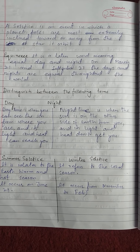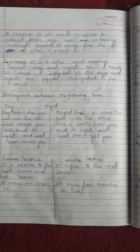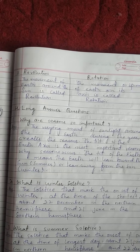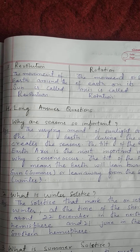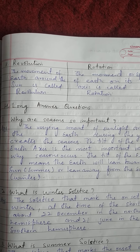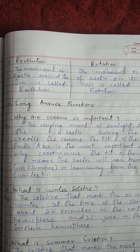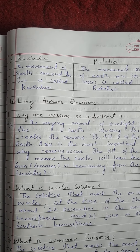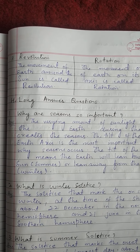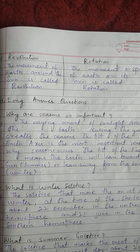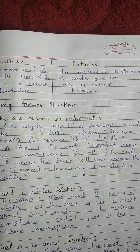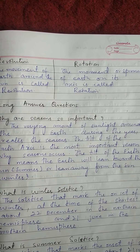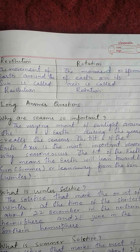It's related to revolution and rotation. The movement of the earth around the sun is called revolution. Rotation is the movement or spinning of the earth on its axis, and that is called rotation.